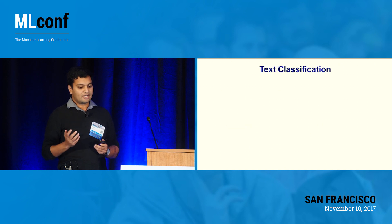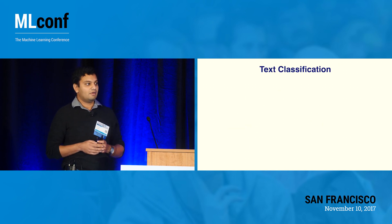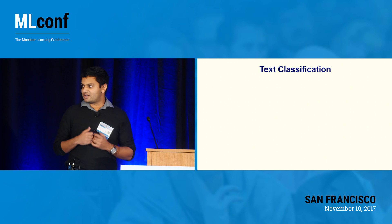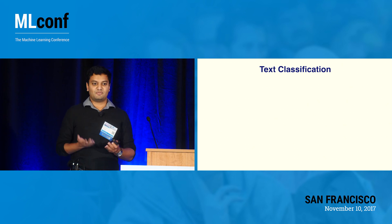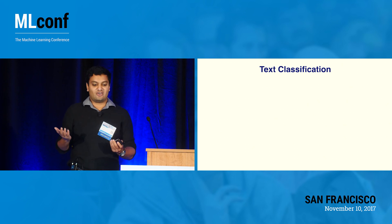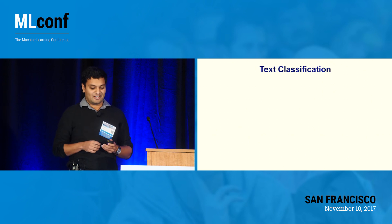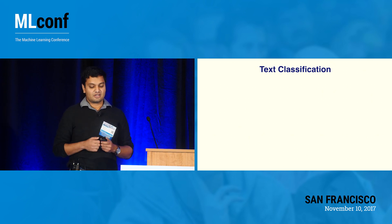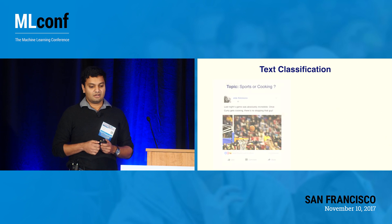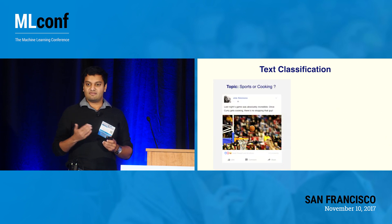Let's start with text classification. Some of you might be wondering, isn't this a pretty standard problem? Isn't text classification solved? You could kind of say that in certain situations, but it turns out that people keep inventing ways of messing up our models.